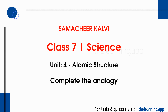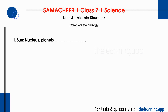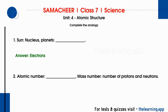Complete the analogy. Question 1: Sun : nucleus :: planets : dash. Correct answer is electrons. Question 2: Atomic number : dash :: mass number : number of protons and neutrons. Correct answer is number of protons or electrons.